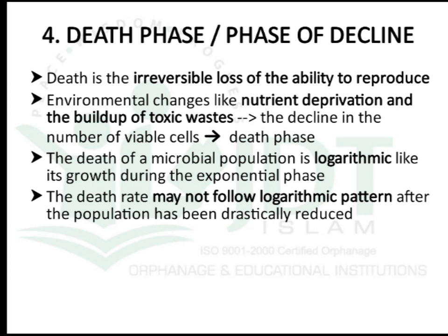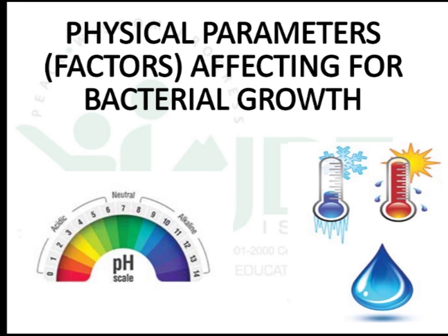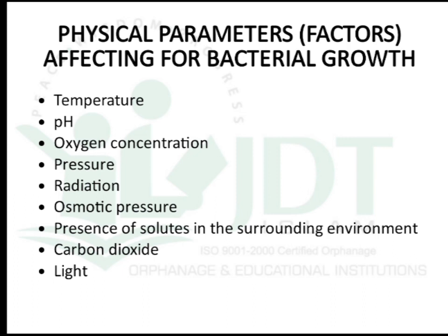This is all about the bacterial growth curve, a frequently asked question in exams covering phases or bacterial growth curve. The different physical parameters or factors affecting bacterial growth are: temperature, pH, oxygen concentration, pressure, radiation, osmotic pressure, presence of solute in the surrounding environment, carbon dioxide, and light.